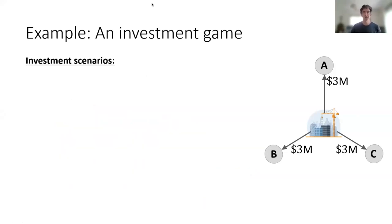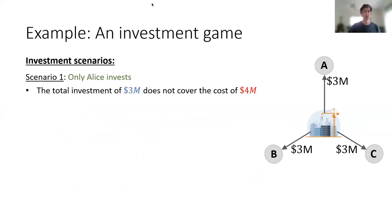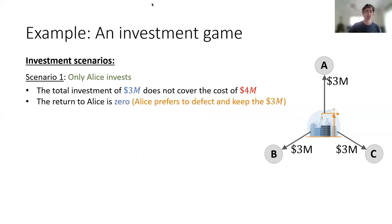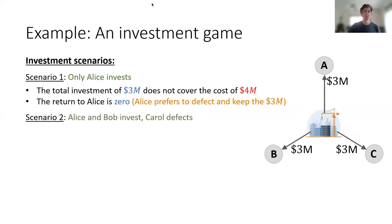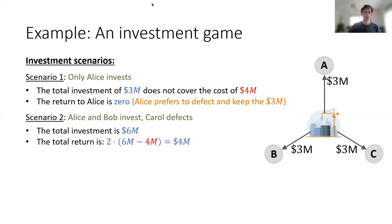Let's look at some investment scenarios. First, if Alice invests alone, the total investment is $3 million, which doesn't cover the cost of the enterprise, so there is zero return for Alice — she would prefer to defect and keep the $3 million. In the second scenario, Alice and Bob invest but Carol defects: the total investment is $6 million, which covers the cost, so the total return is $4 million and the return for Alice is $2 million — she still prefers to defect.